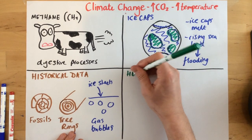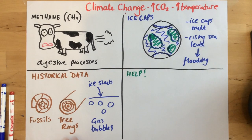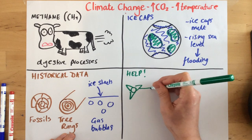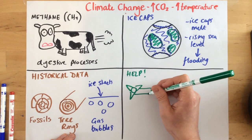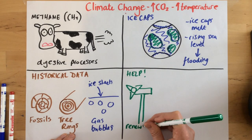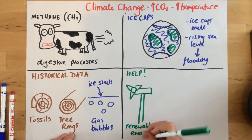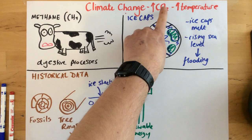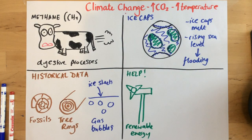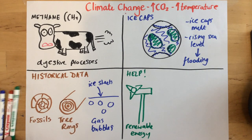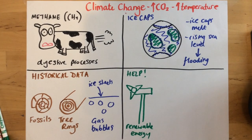So how do we help the situation? What can we do? First of all, we can make a switch to using renewable energy sources. By using renewable energy sources we're not burning as much fossil fuel, so therefore we're not producing as much carbon dioxide. However, that's something that governments need to do.